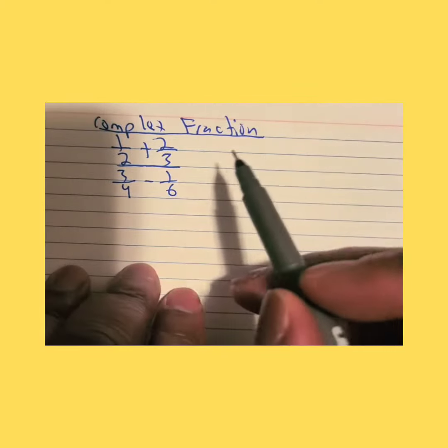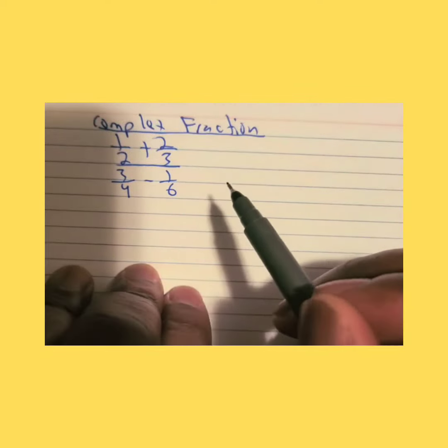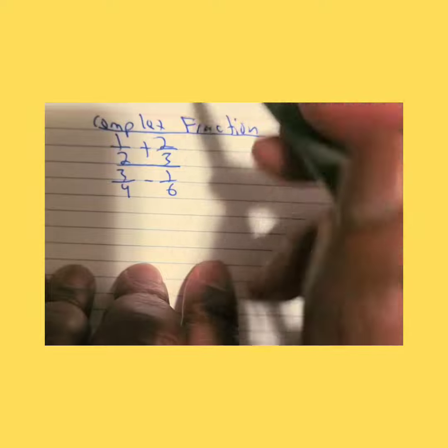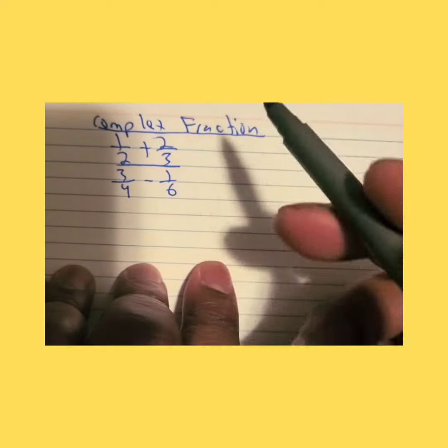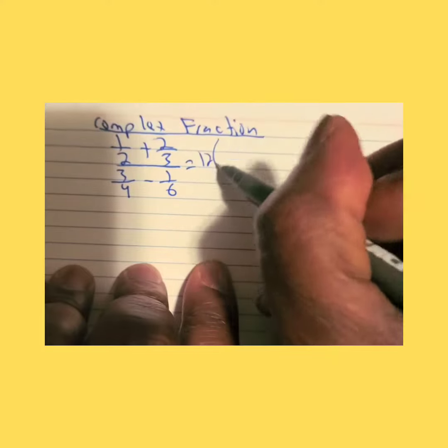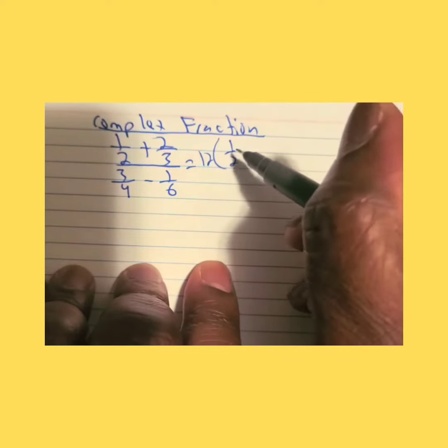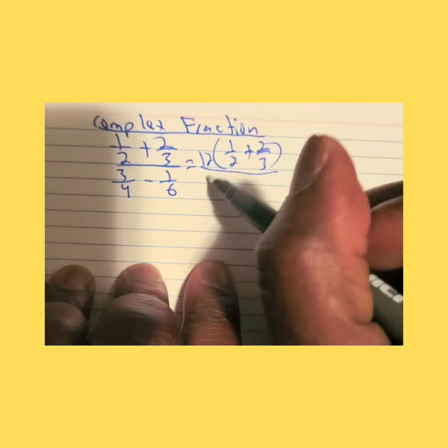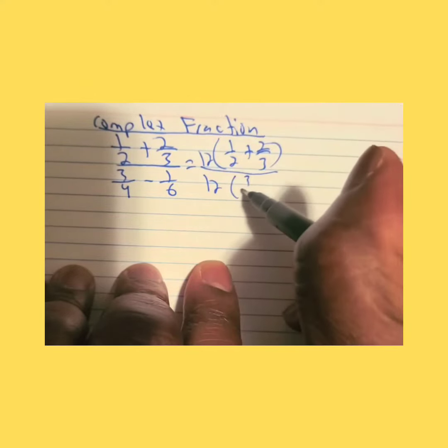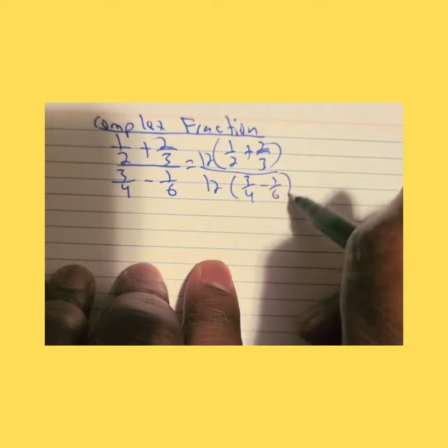Complex fraction: 1/2 + 2/3 over 3/4 - 1/6. Since I'm going to look for the common denominator, it will be 12, so it will equal 1/2 + 2/3 over 12, 3/4 - 1/6.